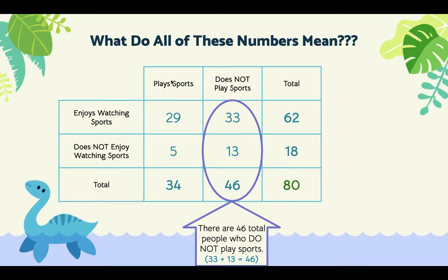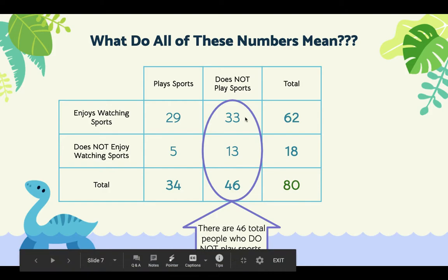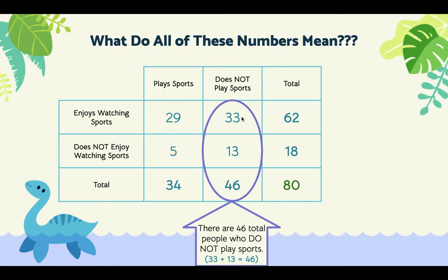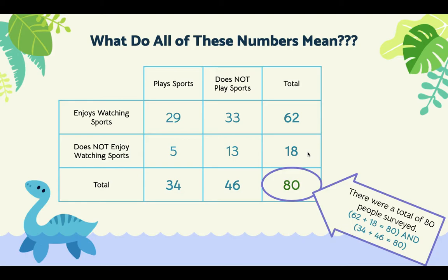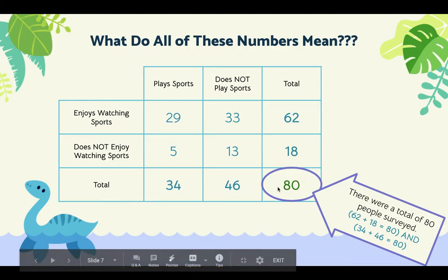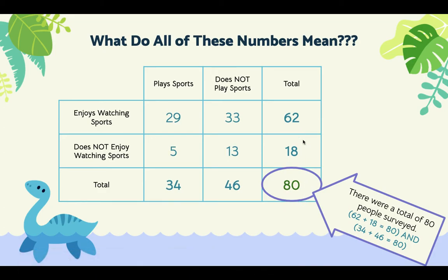See how we're getting these totals? These two column values added together equal the column total, and these two added together equal this column total. For rows, 29 and 33 added together equal 62, and 5 and 13 added together equal 18. There's another way to find the grand total of 80: just add 62 and 18, which equals 80. Also, 34 and 46 together equal 80. So these two row totals added together should equal the same as the two column totals added together — both give 80.